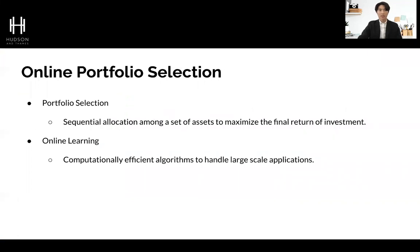So what exactly is online portfolio selection? We can broadly divide the definition into two parts: portfolio selection and online learning. Portfolio selection is a sequential allocation among a set of assets to maximize the final return on investment. Every day a portfolio manager is given the task to decide the allocation of capital, and we formulate the problem so that the weights and the daily returns can be represented in a vector format. The product of the two will represent the daily returns of the strategy.